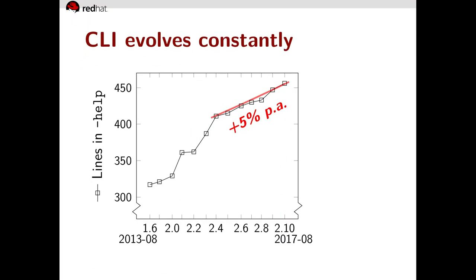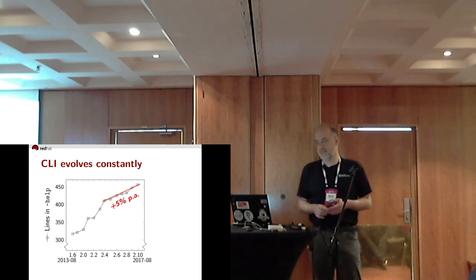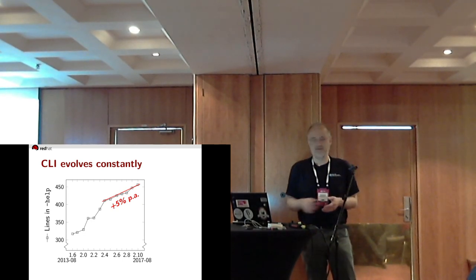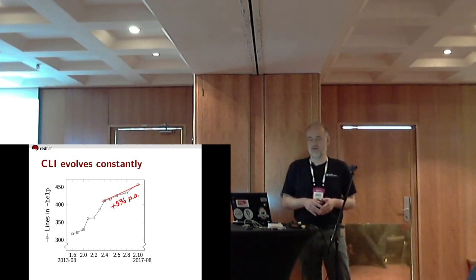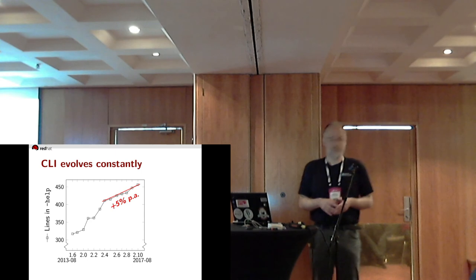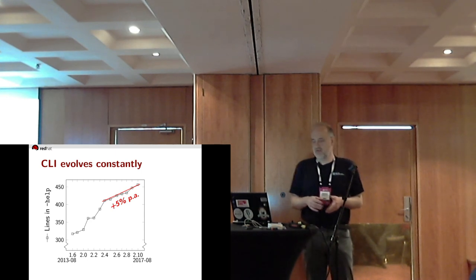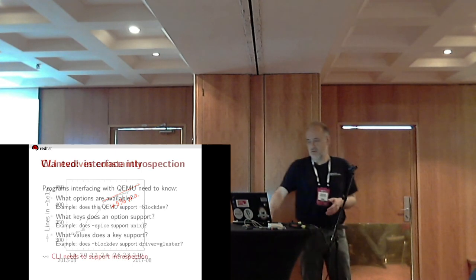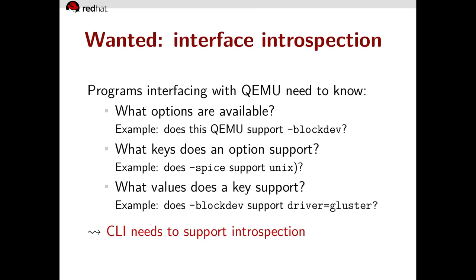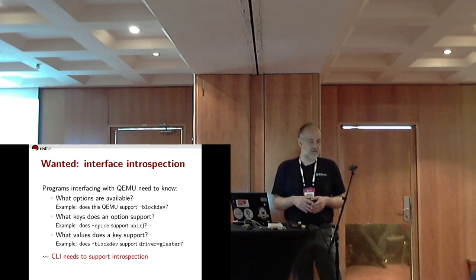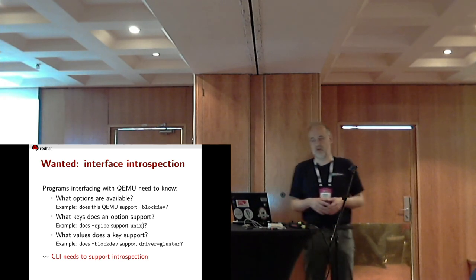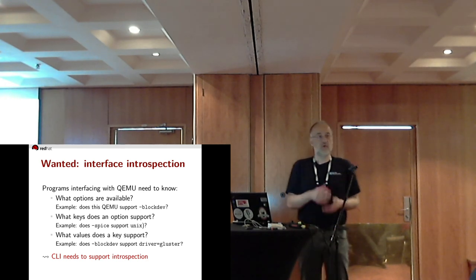The command line evolves constantly. This graph shows the number of lines in the output of --help over time, and as you can see it has grown by roughly 5% per year, year over year. It used to grow even faster. Programs interfacing with QEMU need to cope with this change unless they are willing to tie themselves to a specific version of QEMU. They need to figure out what the QEMU they got can do.